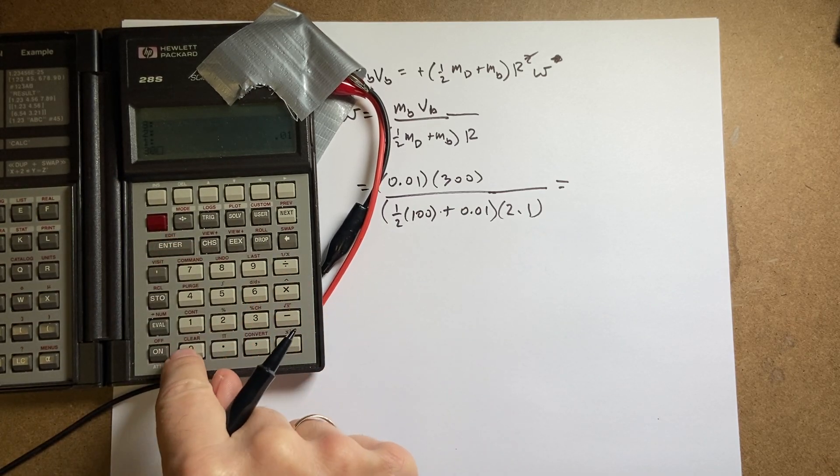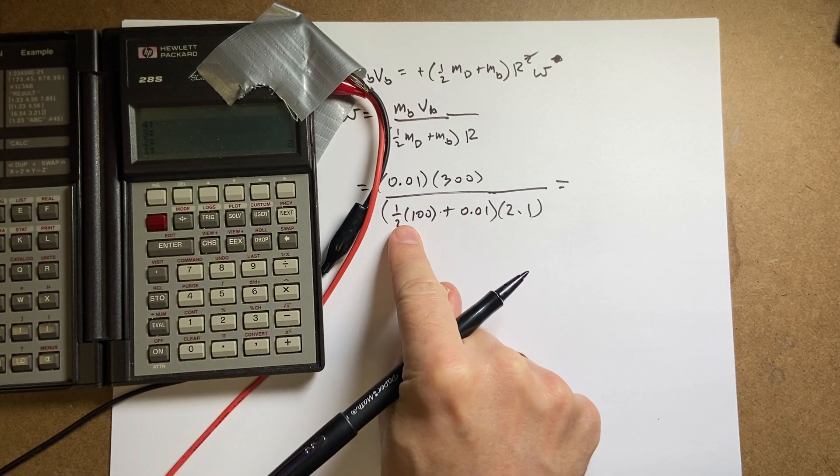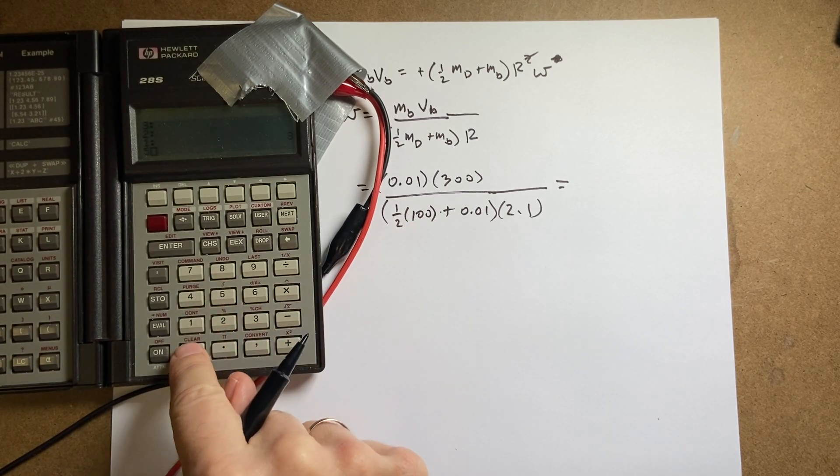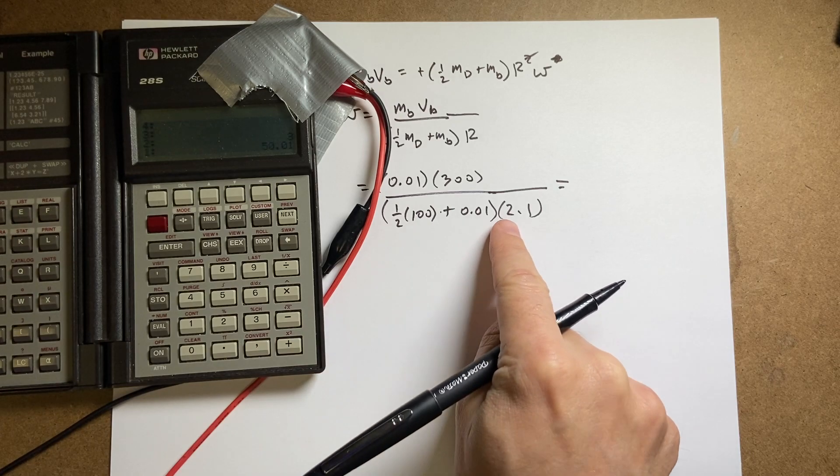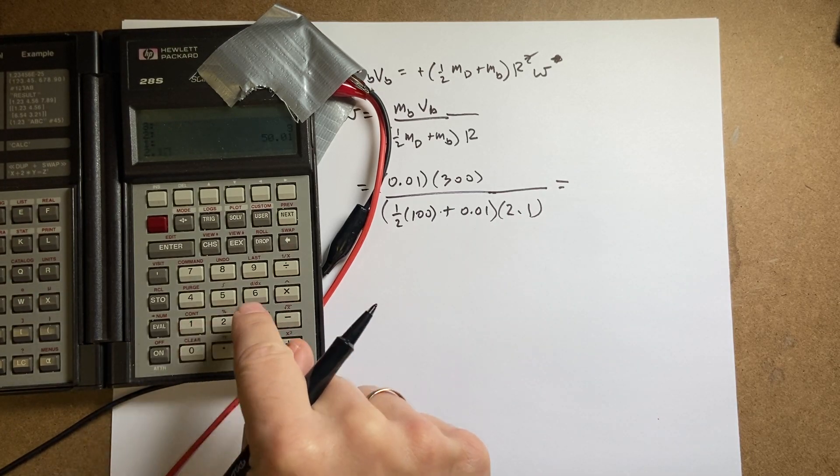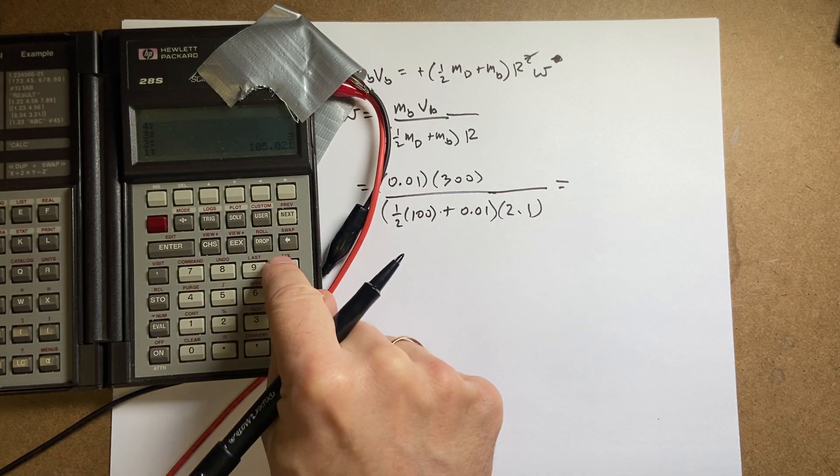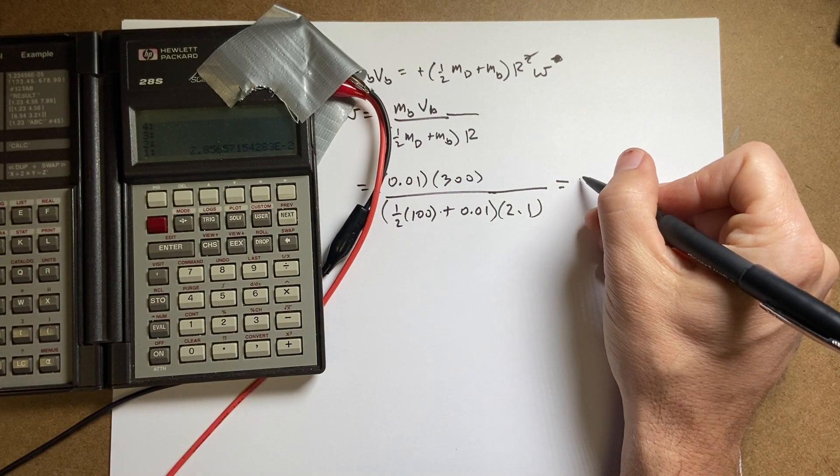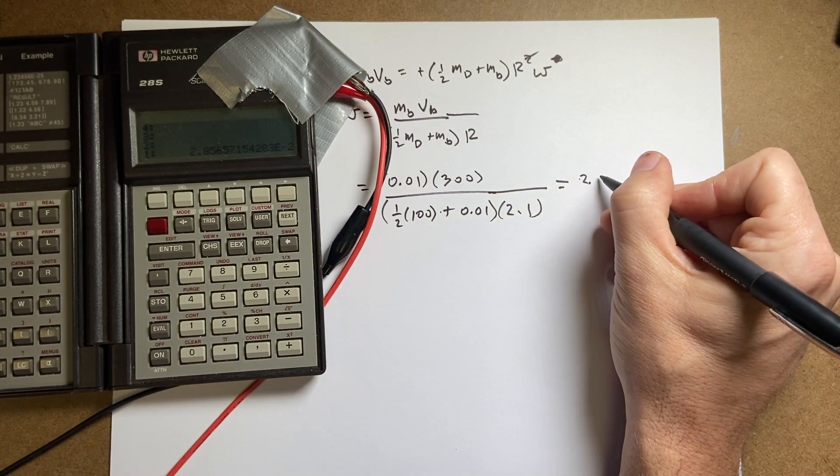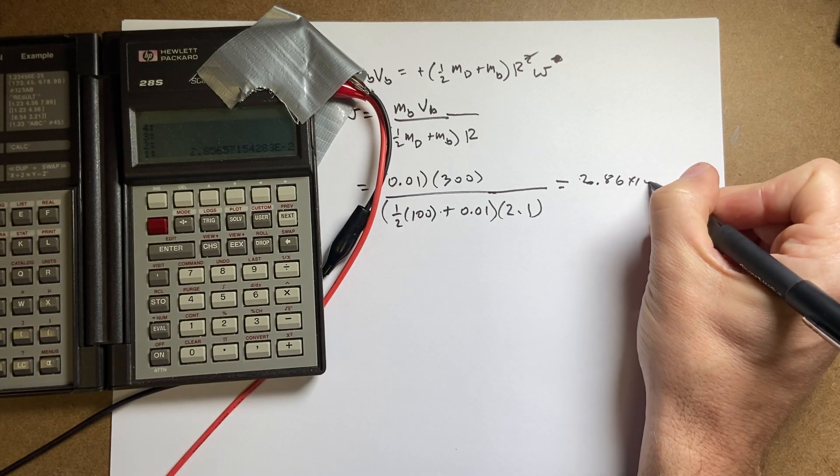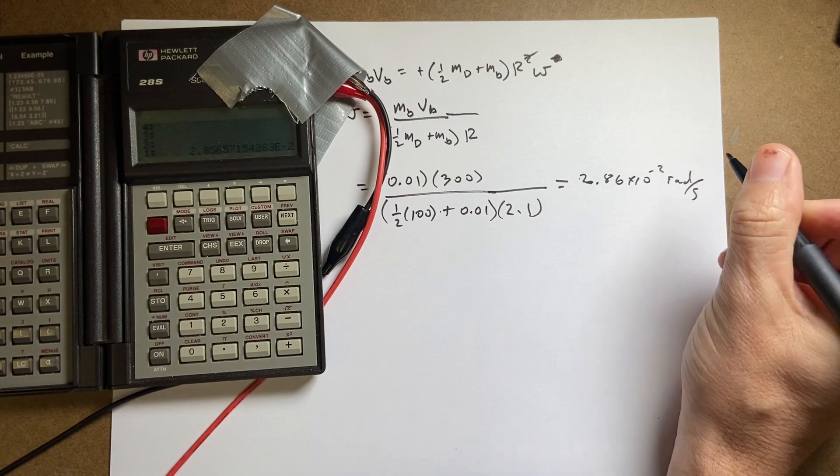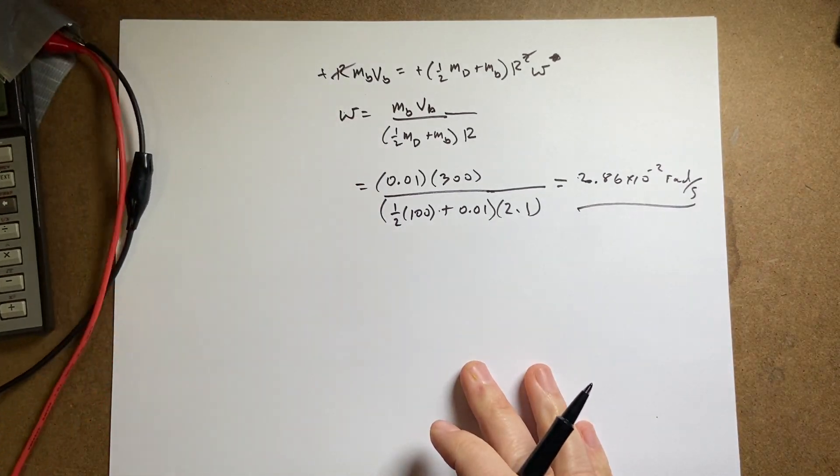I get 0.01 enter, 300 times. Now I need to do this. I'm going to put that as 50, 50 enter, 0.01 plus, multiply it by 2.1, 2.1 times. Now divide that and I get 2.286 times 10 to the negative 2 radians per second. And that's the angular velocity. So the answer is super slow, right? Not very fast at all. That bullet's not going to do too much.